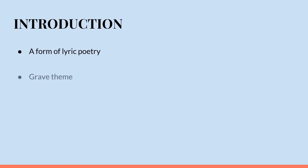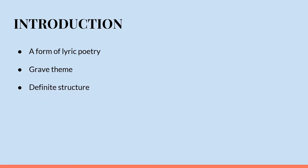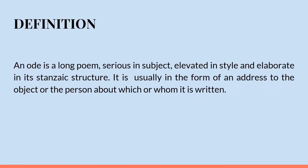An ode is a form of lyric poetry which is based on a grave theme and follows a definite structure. Like its parent form, the lyric, the ode is of Greek origin. An ode is a long poem, serious in subject, elevated in style and elaborate in its stanzaic structure. It is usually in the form of an address to the object or the person about which or whom it is written.